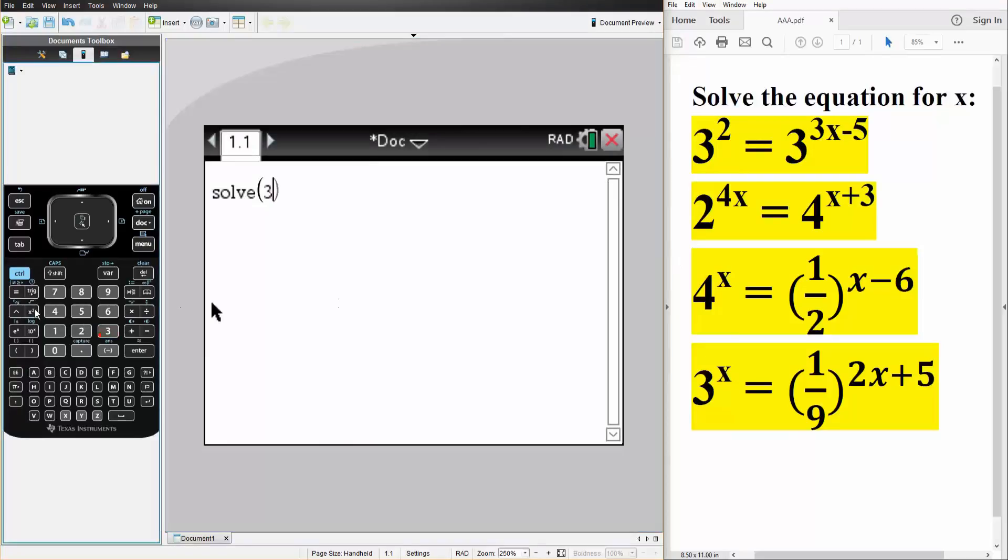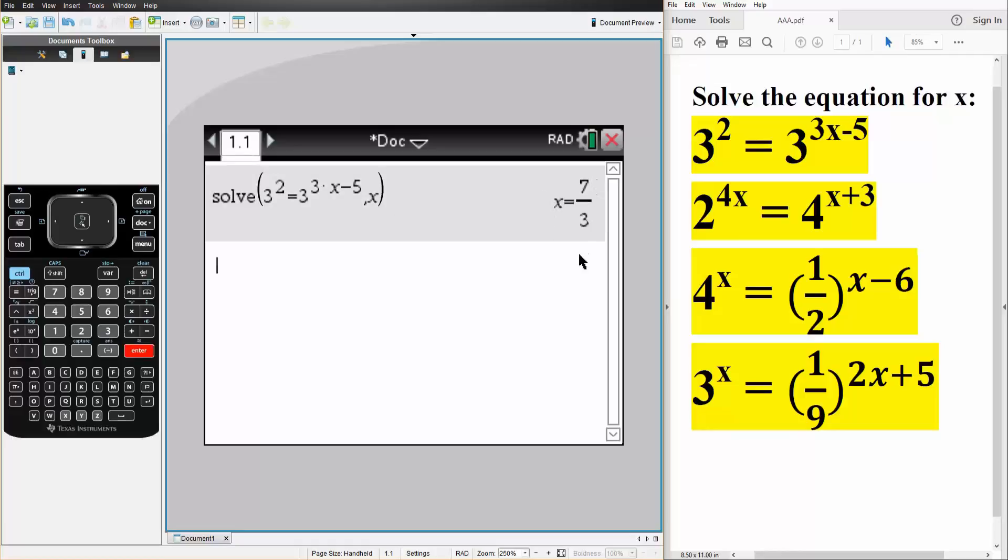So we have 3 squared is equal to 3 raised to 3 times x minus 5. The next step is very important, so it's comma x, like this, comma x, since we're solving for x. Hit enter, so the answer is x is equal to 7 over 3.